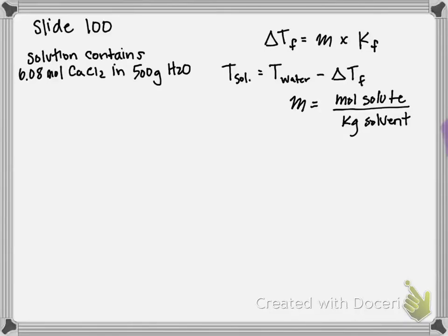This is the example problem on slide 100 of our chapter 12 PowerPoint, and the question reads: In the northeastern United States during freezing weather, calcium chloride is spread on icy highways to melt the ice. Calculate the freezing point lowering and freezing point of a solution containing 6.08 moles of calcium chloride in 0.5 kilograms of water.